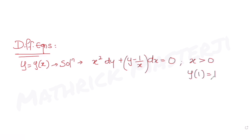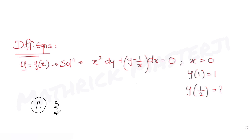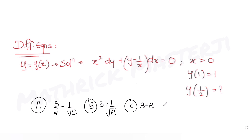We are also given that y(1) = 1, meaning at x = 1, y = 1. We need to find the value of y(1/2), i.e., y at x = 1/2. The four answer choices are: (A) 3/2 - 1/√e, (B) 3 + 1/√e, (C) 3 + e, and (D) 3 - e.